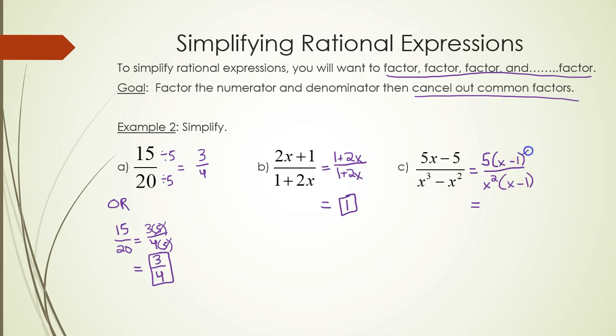x minus 1 on the top cancels out with x minus 1 on the bottom. That's 5 over x squared as your answer.